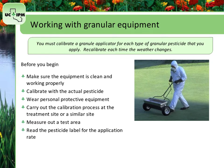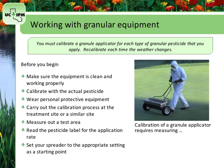Read the pesticide label to determine the pesticide application rate. Rates will be given as amount of product per area. The pesticide should have a booklet with information on different spreader settings for the desired rate of application. If your spreader is listed, set it to the appropriate setting as a starting point. Calibration of a granule applicator requires measuring three things: the travel speed, swath width, and output rate.